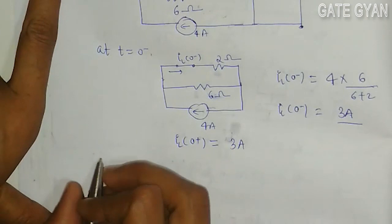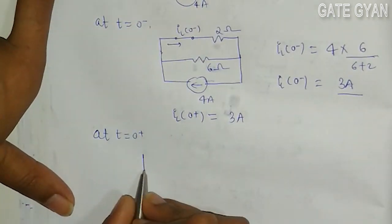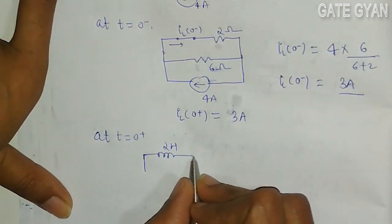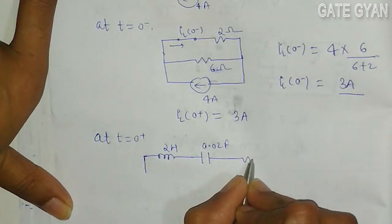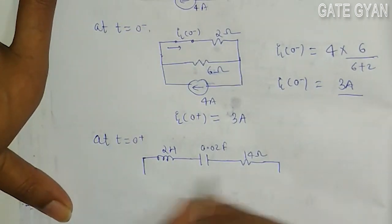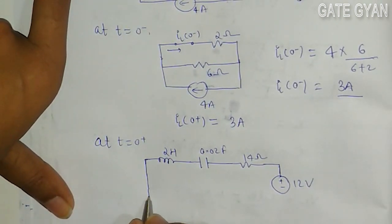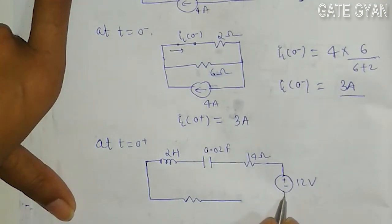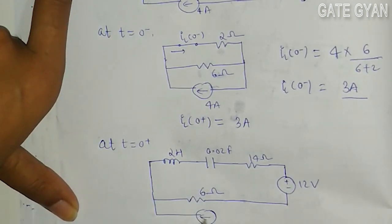Now at t equal to 0 plus, the circuit moves to position B. The circuit will look like: we have a 2H inductor, a capacitance of 0.02F, plus minus 12 volts, 6 ohms resistance, and a 4A current source.